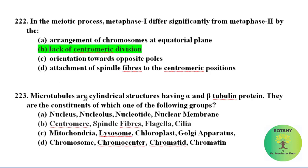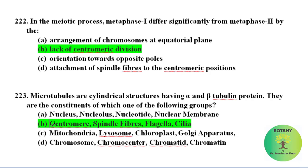Microtubules are cylindrical structures having alpha and beta tubulin proteins. These microtubules are the constituent of centromere, spindle fibres, flagella, and cilia. They are present in all of these four.